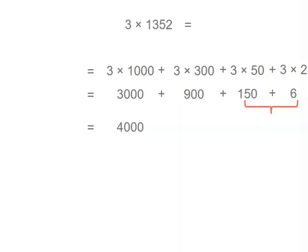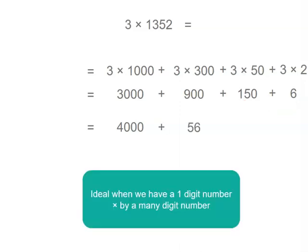So at this point, if I was distracted and I came back, I'd know that I still needed to add 50 plus 6. So that's 56, and I've got 4,056.